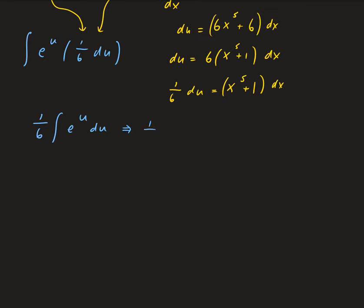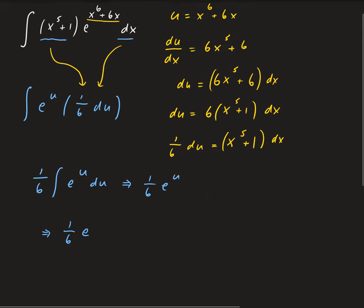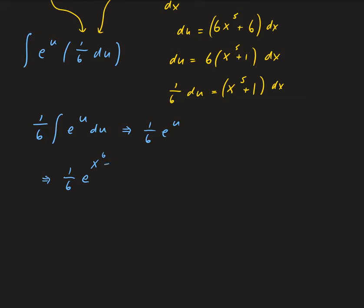So we have one sixth times the integral. Taking the integral, we're going to have e to the u. I'll put the constant at the end. So this is going to give us one sixth e to the u. U was x to the sixth plus six x, and plus some constant. So this is the solution for our integral.